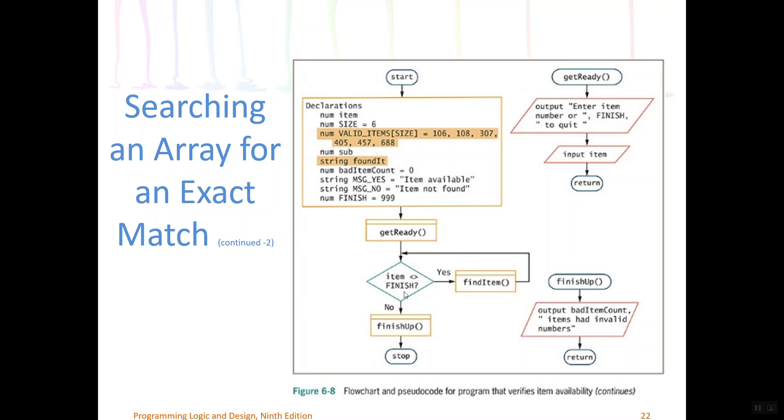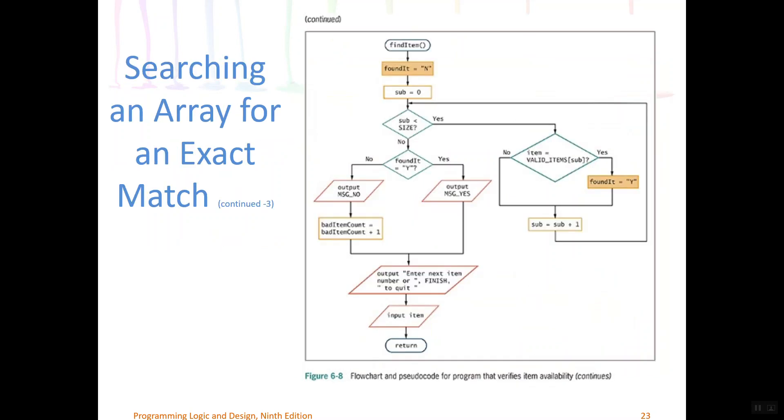Now had the user typed 999 we would have instead proceeded to the finishUp module jumping over here. The finishUp outputs how many times they had searched for invalid numbers. So they concatenate bad item count. So let's say they had searched for three items that were not in our list. This would say three items had invalid numbers. So we can't see on this screen how bad item count is updated. We're going to see that in the FindItem module coming up. But we can see here how it's output.